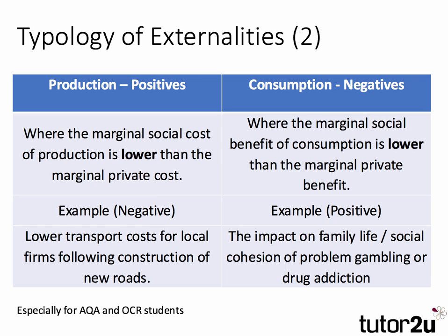There are two other types of externality which AQA students and in part OCR students need to know. They make a further distinction between positive externalities from production and negative externalities from consumption. With positive production externalities, the marginal social cost of production is lower than the marginal private cost — an agent incurs a cost but actually lowers costs for other third parties. A good example would be construction of a new road which might lower transport costs for local firms.